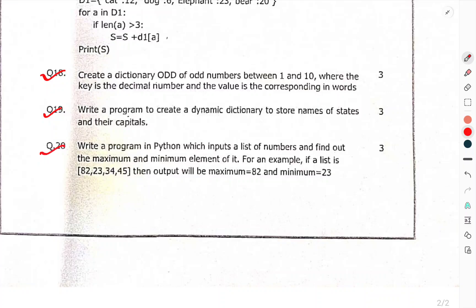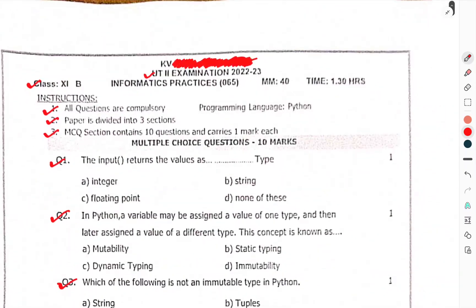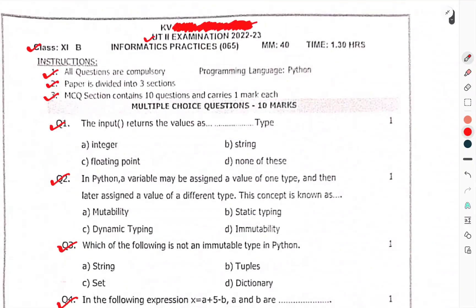Write a program in Python which inputs a list of numbers and find out the maximum and minimum element of it. For example, if a list is this, then output will be maximum 82 and minimum 23. This was the question paper of class 11th Subject IP UT2. That's enough for this one. Thank you.